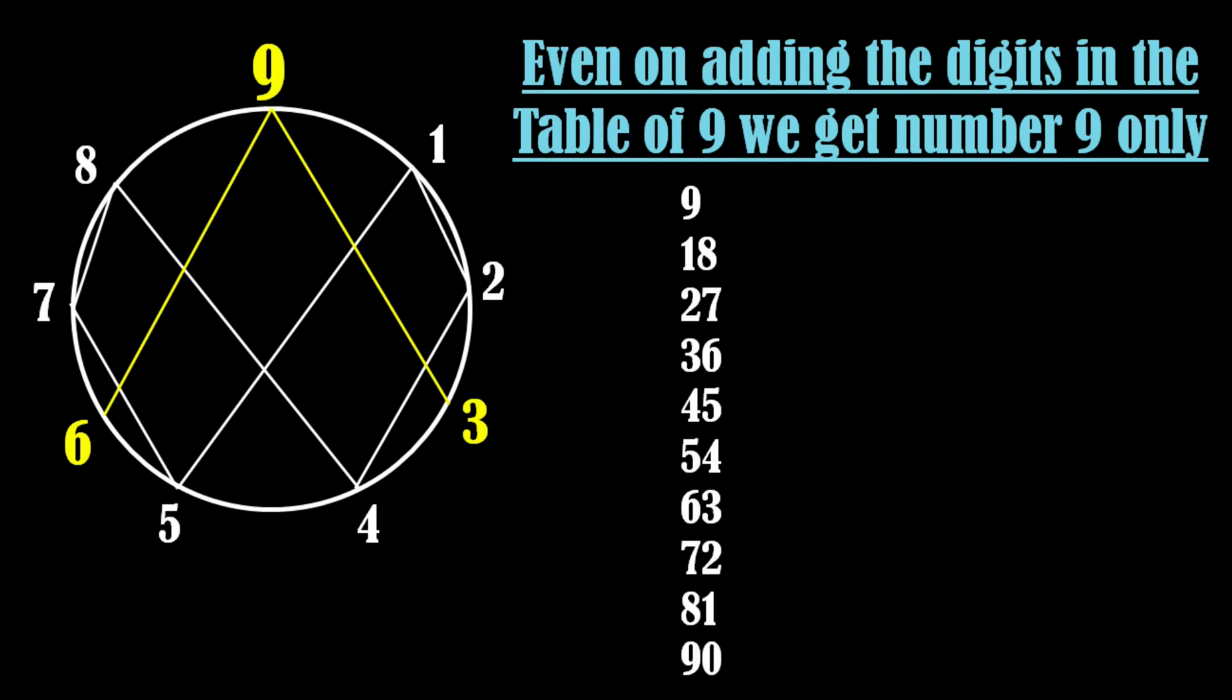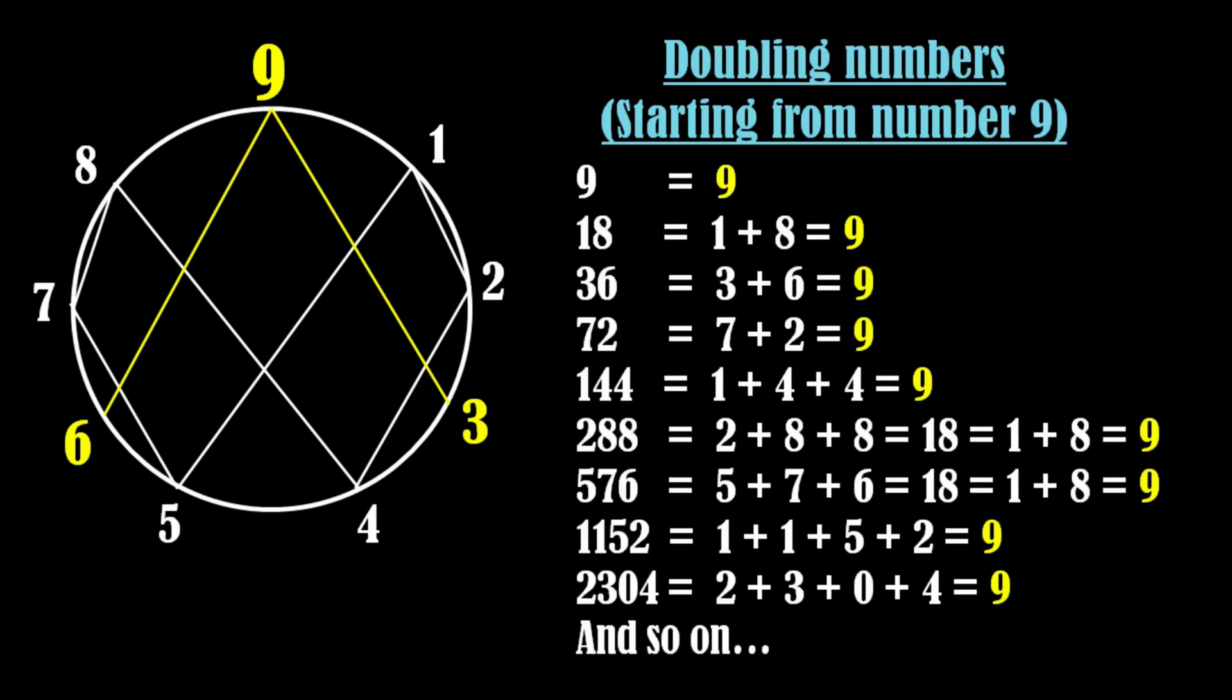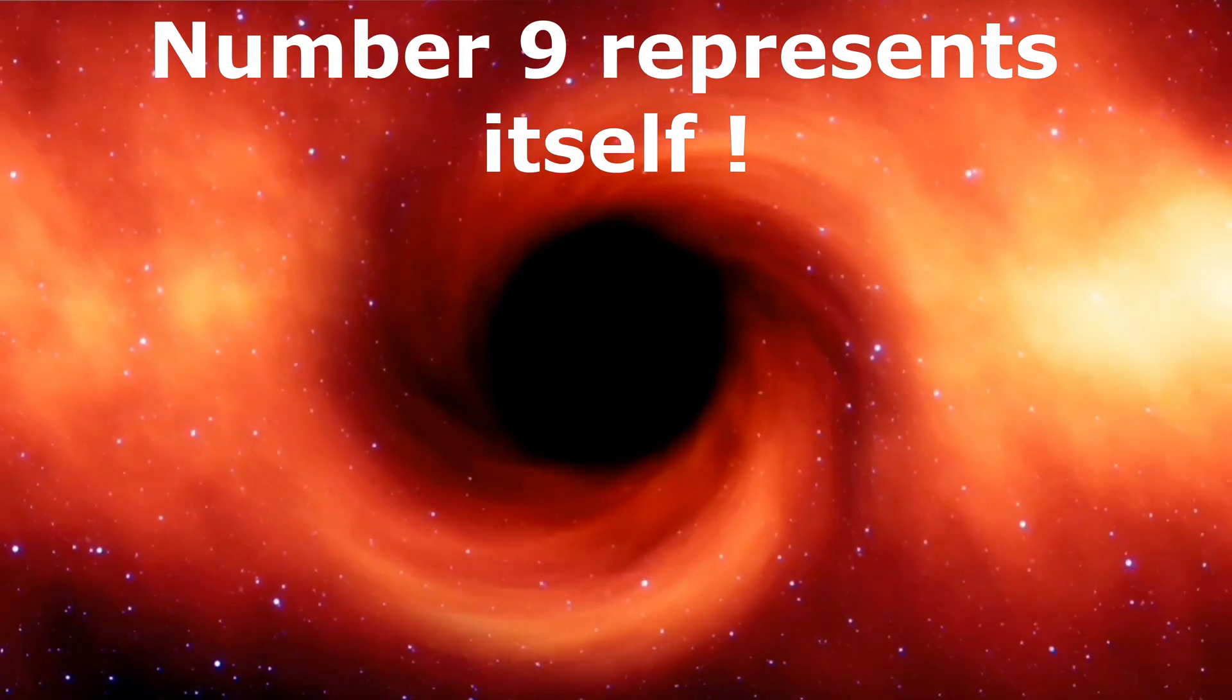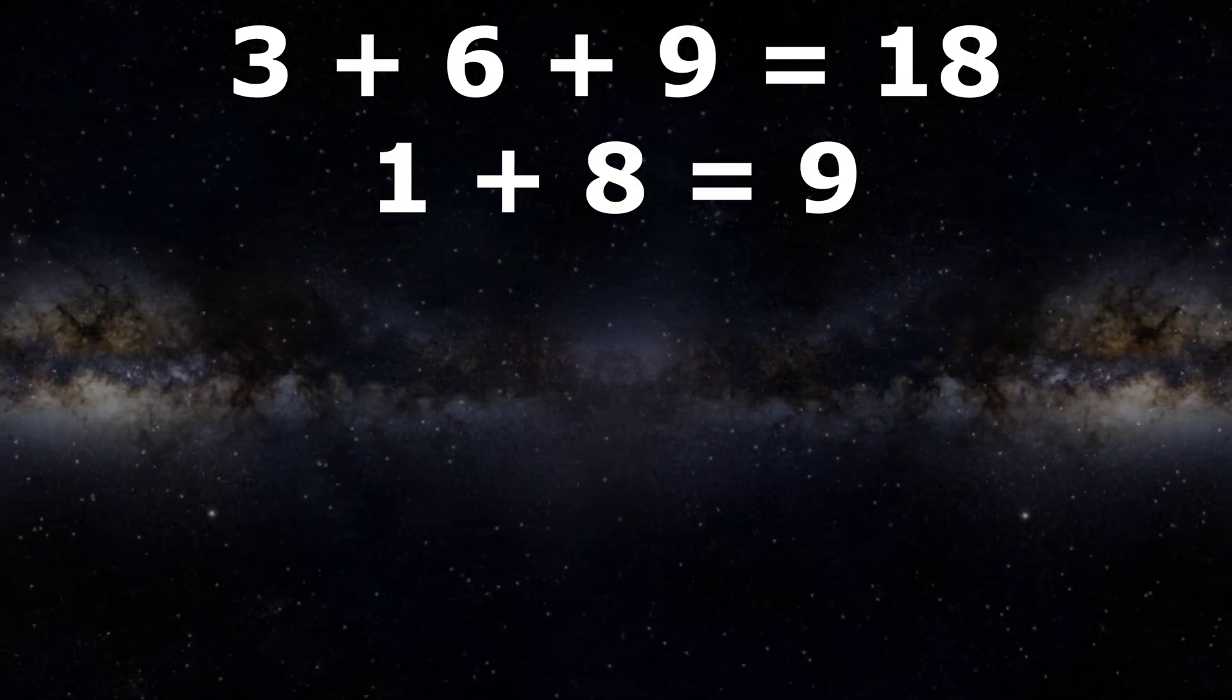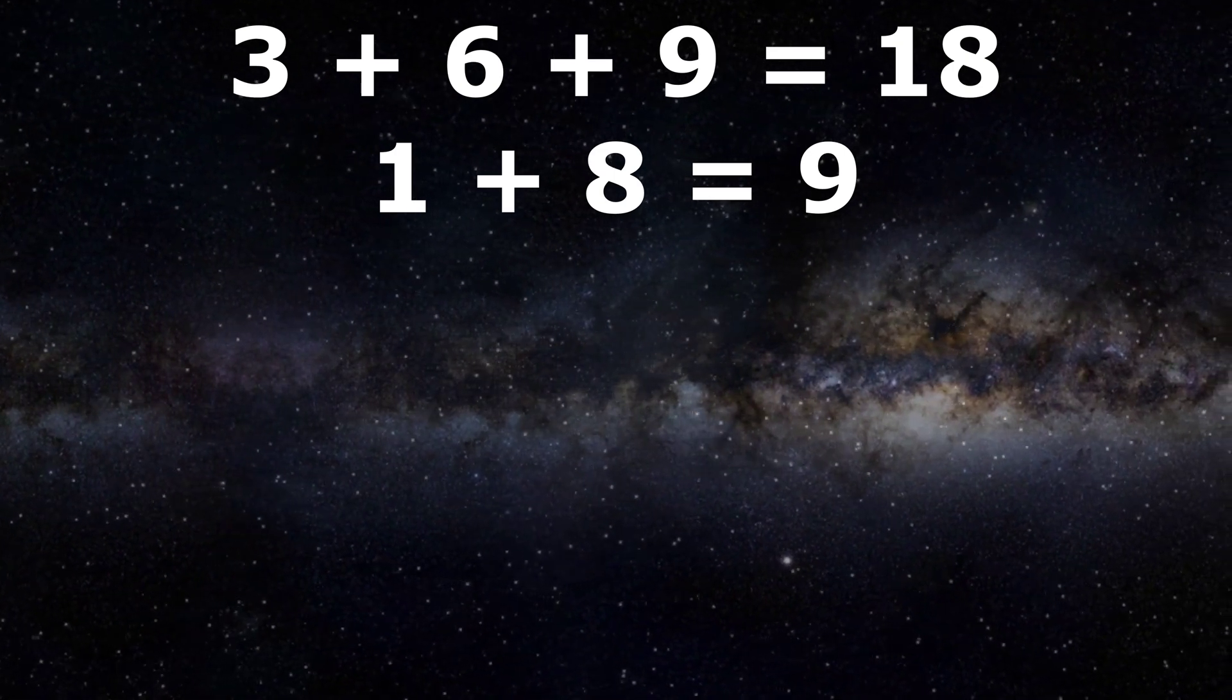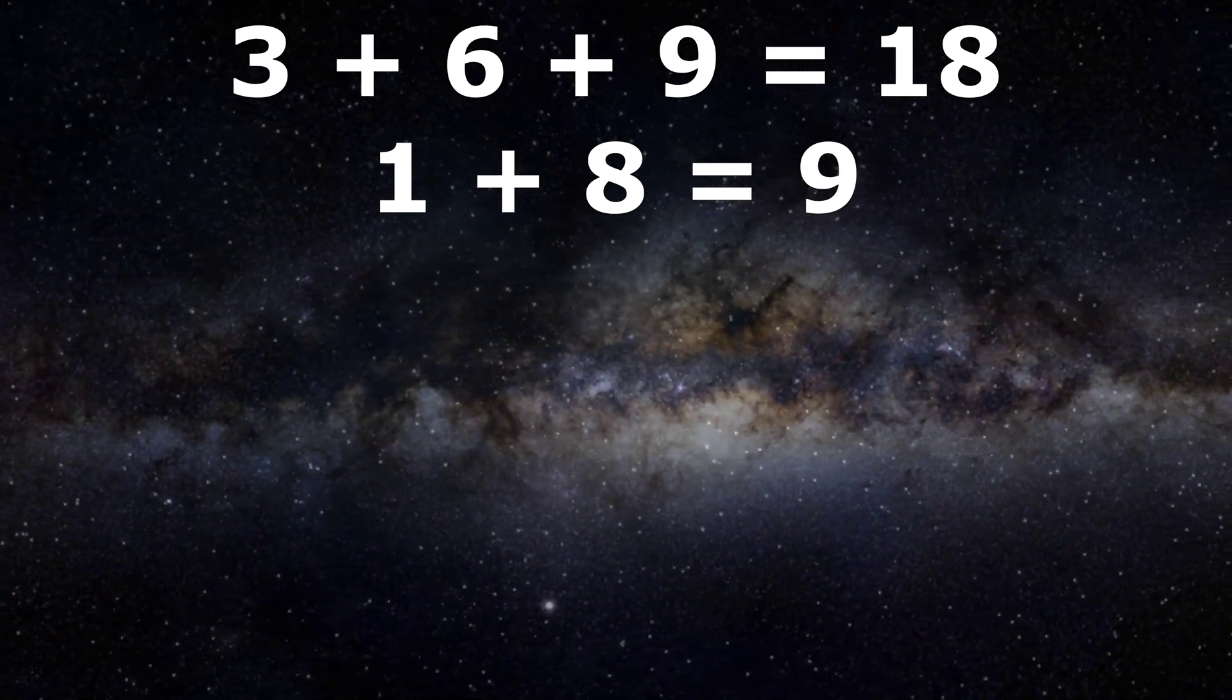Additionally, when we add the digits in the table of 9, we consistently arrive at number 9. Therefore, whether we double or halve the numbers starting from 9, the outcome is always the number 9. The observation implies that number 9 represents itself. Even if you add all the three numbers present in 3, 6 and 9, you will get 9 as the digital root.